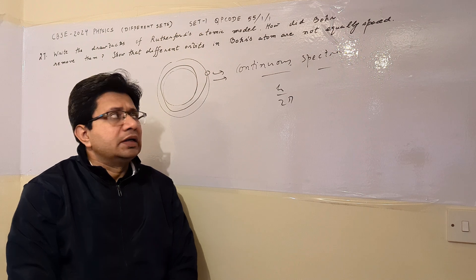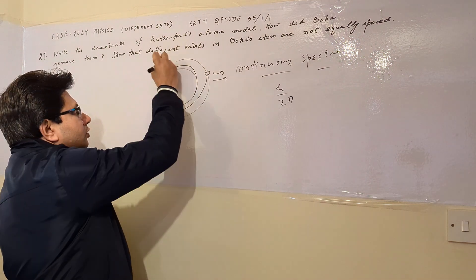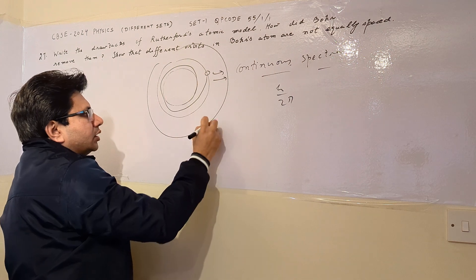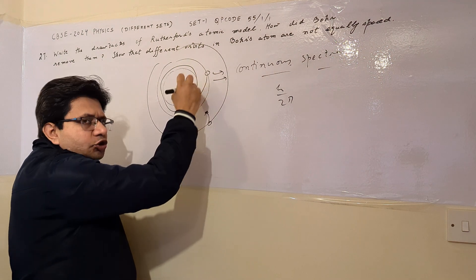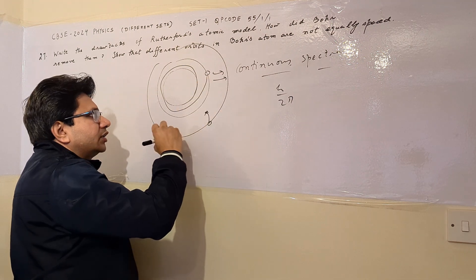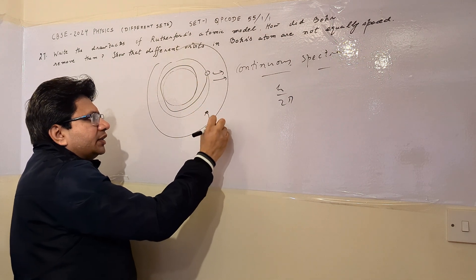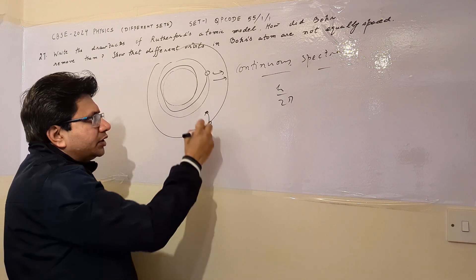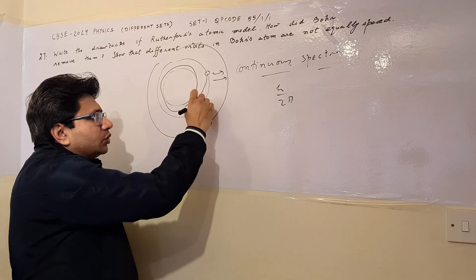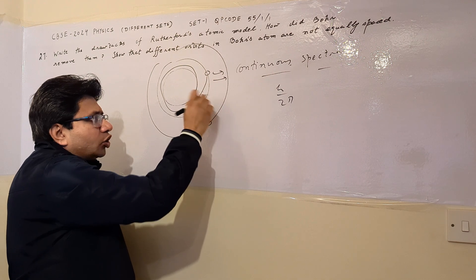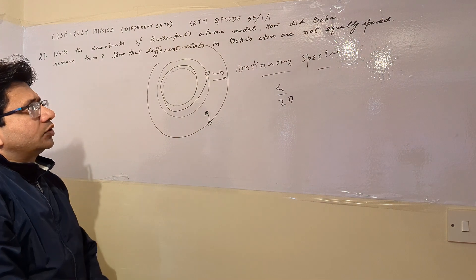According to Bohr, when a charge carrier moves from one stable orbit to a lower energy stable orbit, it emits a photon. The energy of this photon depends upon the energy level difference between these two orbits. This is Bohr's postulate for the improvement of the Rutherford atomic model.